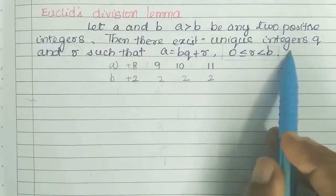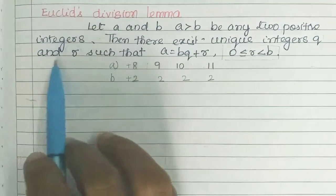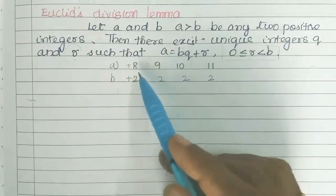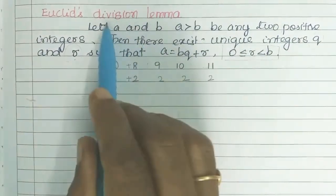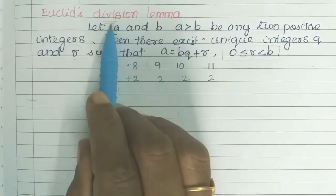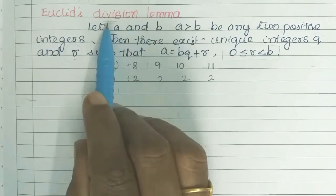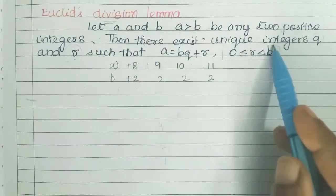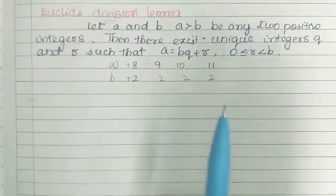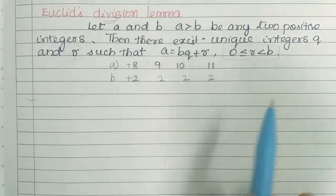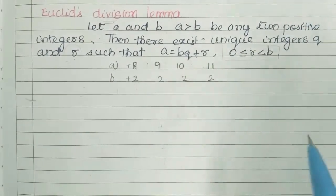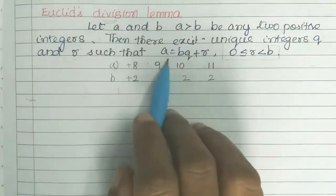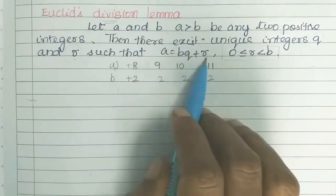There exist unique integers q and r. So now we divide these two. This is a division. We divide a by b to find the unique integers q and r such that a is equal to bq plus r.